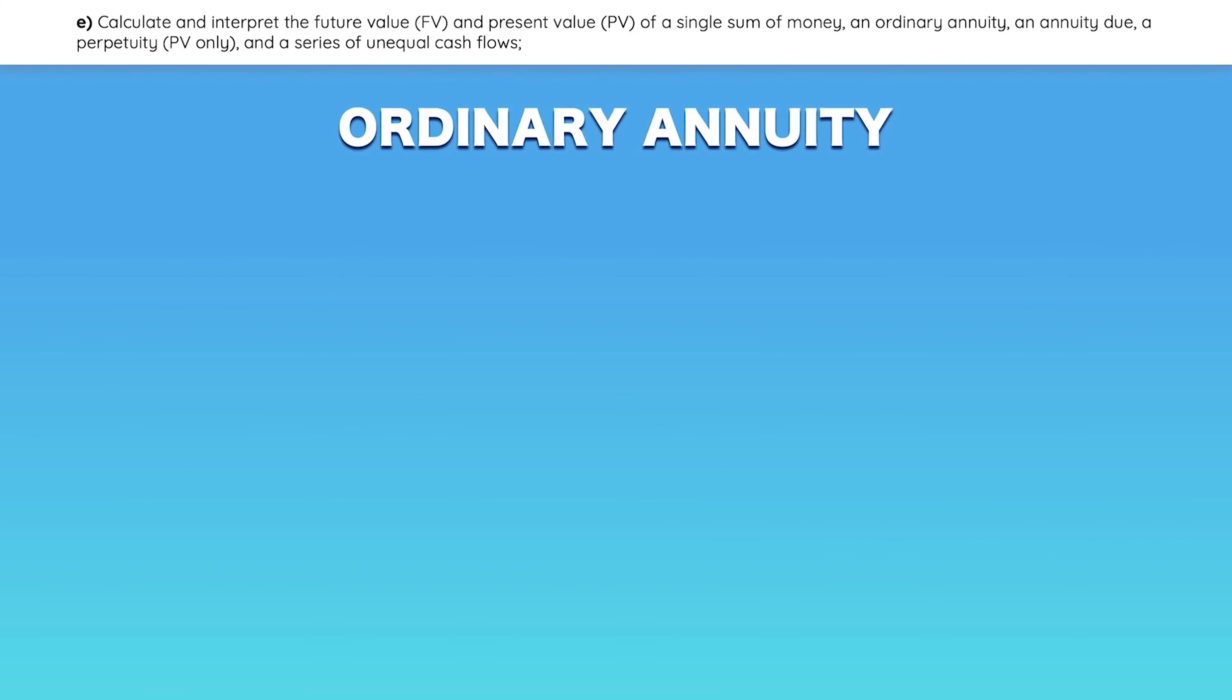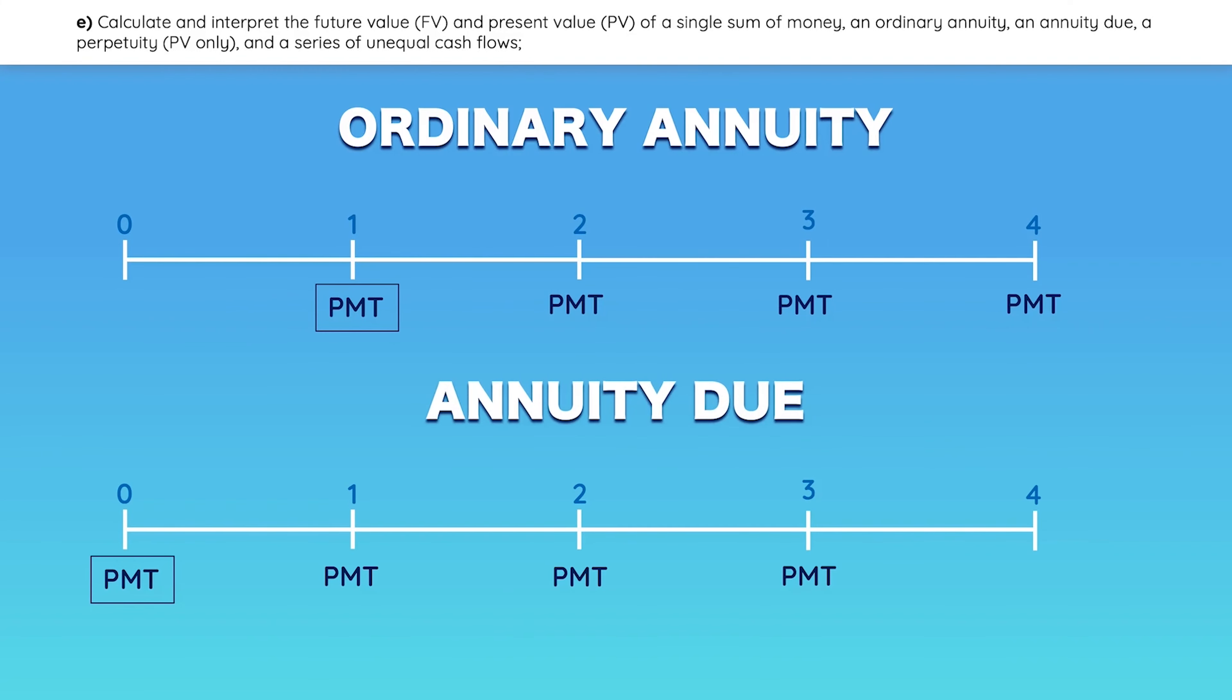How does an ordinary annuity differ from an annuity due? An ordinary annuity is where the first cash flow occurs at the end of the period, whereas in an annuity due, the first cash flow occurs immediately.